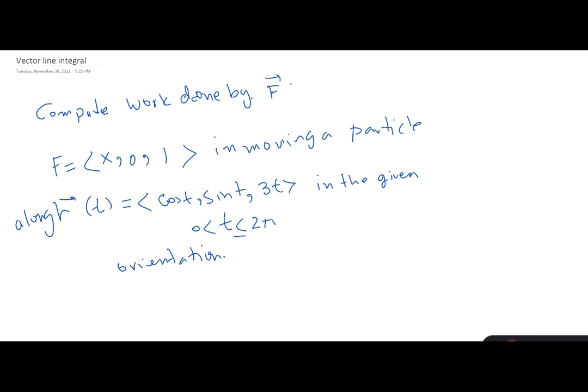Let's compute the work done by vector field F, where F is given as (X, 0, 1), in moving a particle along the path parameterized by R(T) = (cosine T, sine T, 3T) in the given orientation, where T is between 0 and 2π.